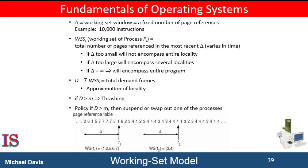The working set model is based on the assumption of locality that we talked about in the last lesson. This model uses a parameter, delta, to define the working set window. The idea is to examine the most recent delta page references. In other words, the pages that make up what we would refer to as a working set is expressed by delta. The set of pages in the most recent delta page references is the working set, as shown at the bottom of the screen.